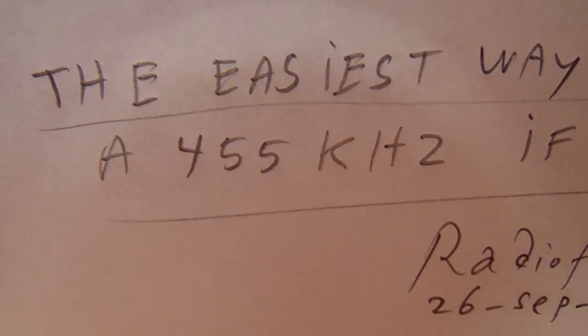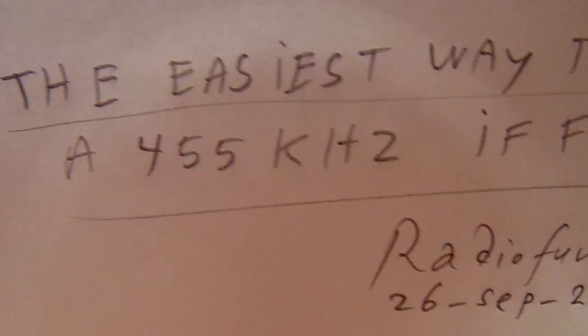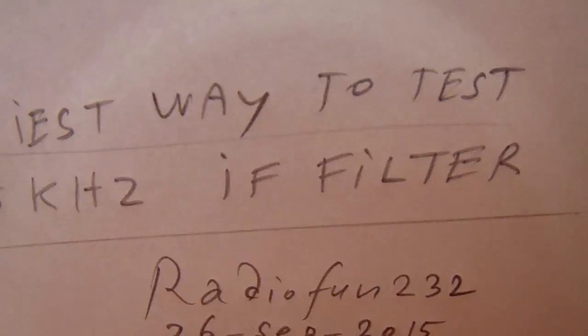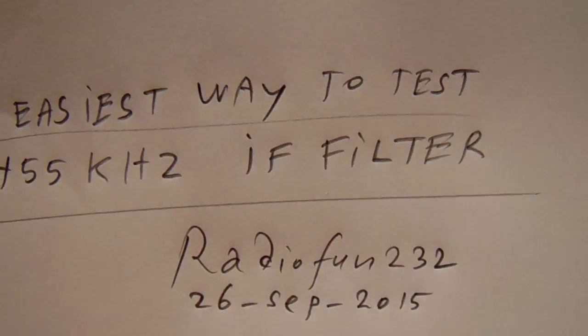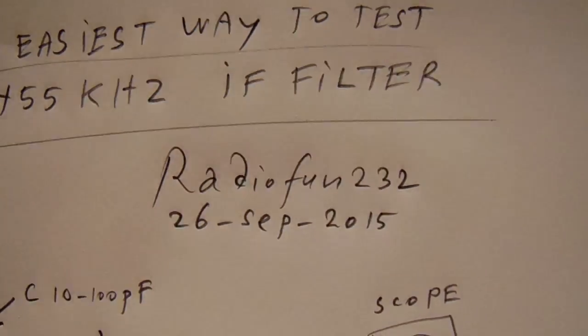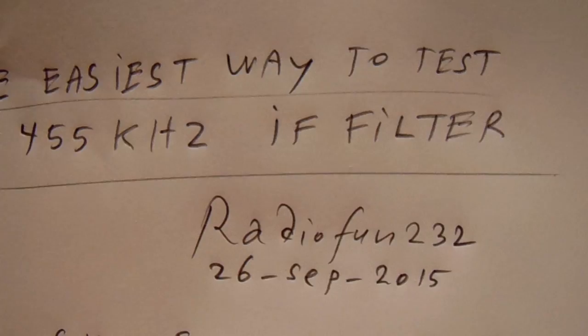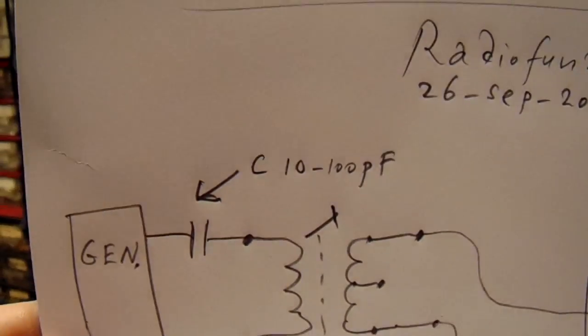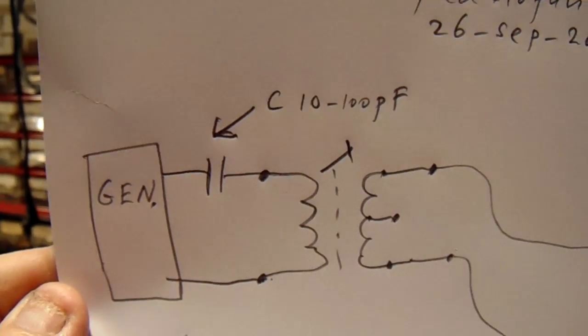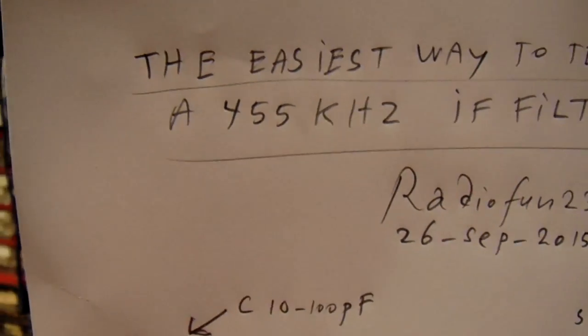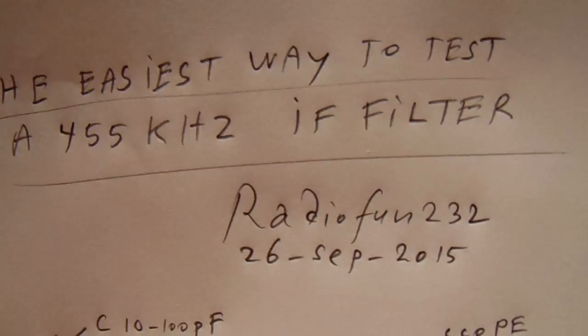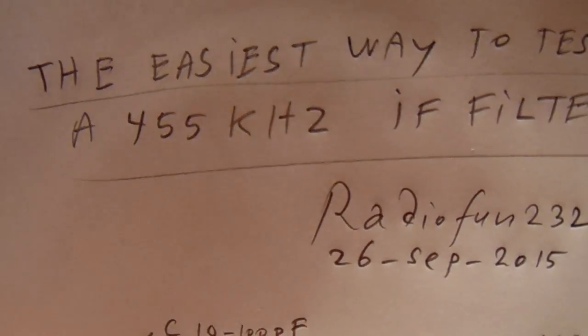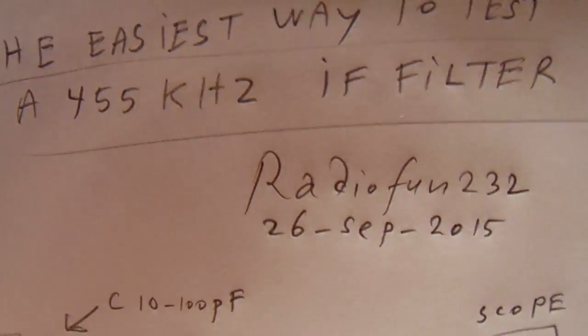That's 455 kHz or 460 kHz and also 10.7 MHz. 10.7 MHz refers more or less to FM radios, and in this video I want to pay some attention to the easiest way to test the 455 kHz IF filter.